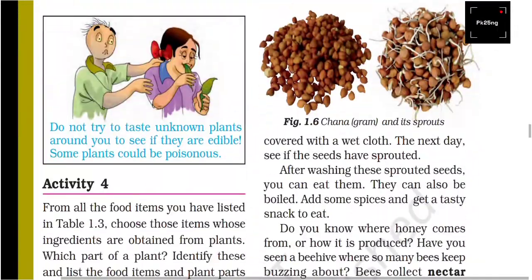Chana and gram have sprouted — meaning they have germinated. Covered with a wet cloth, the next day you can see if the seeds have sprouted.